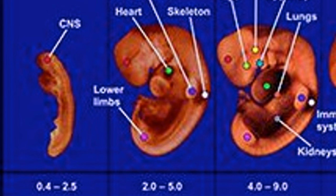In week 4, the baby is about 2 to 5 mm long and appears curved. In this week, the heart, kidneys, and buds for the hands and legs begin to form. The heart begins to beat from week 4 and this will continue throughout life. Early development of the eyes, the optic sulcus, also begins to form.